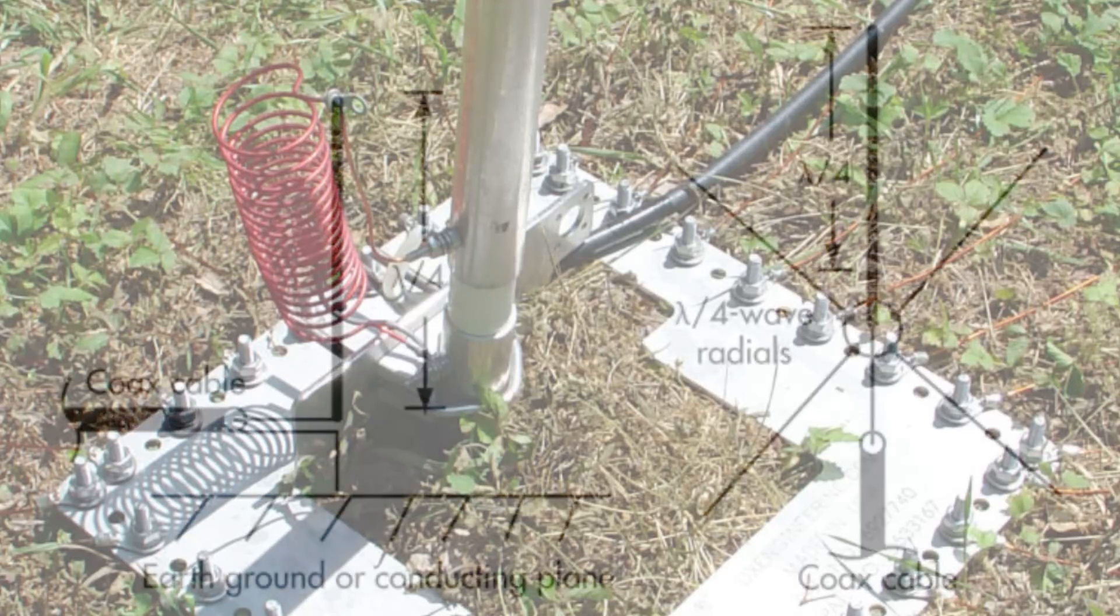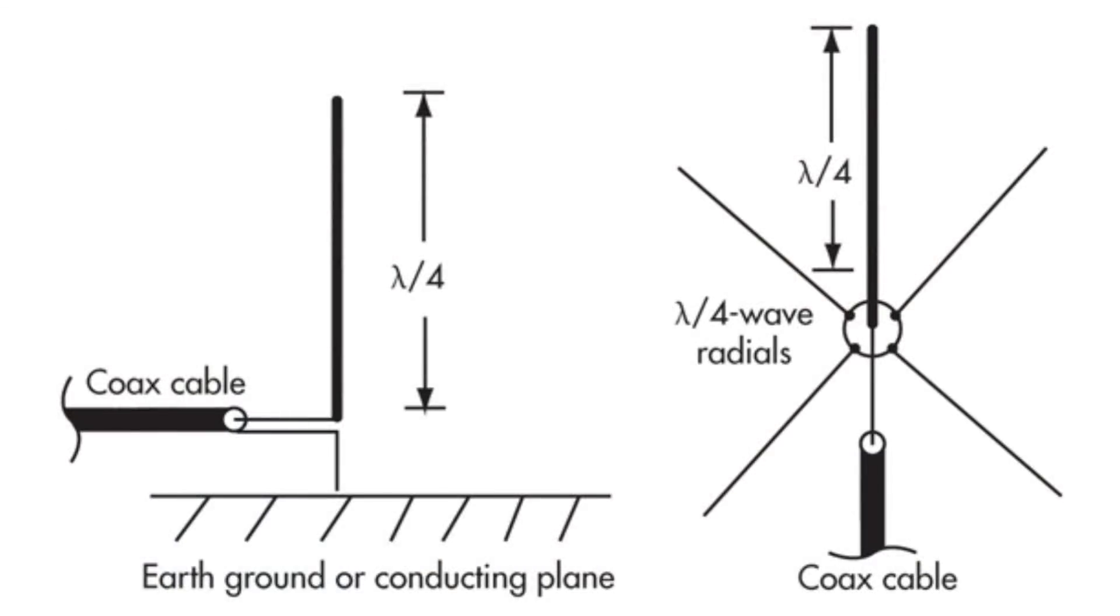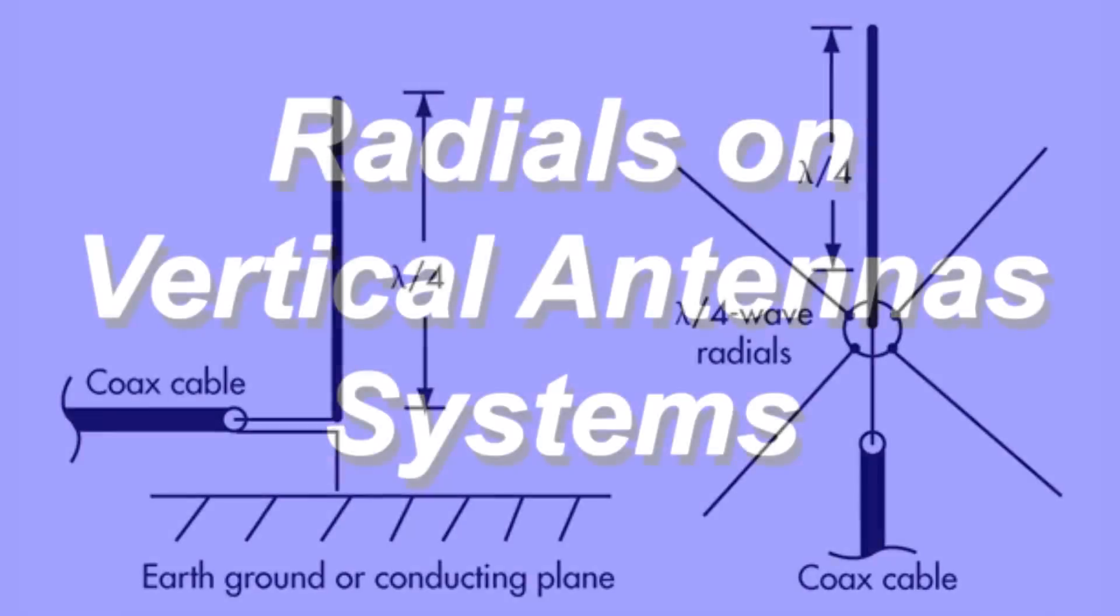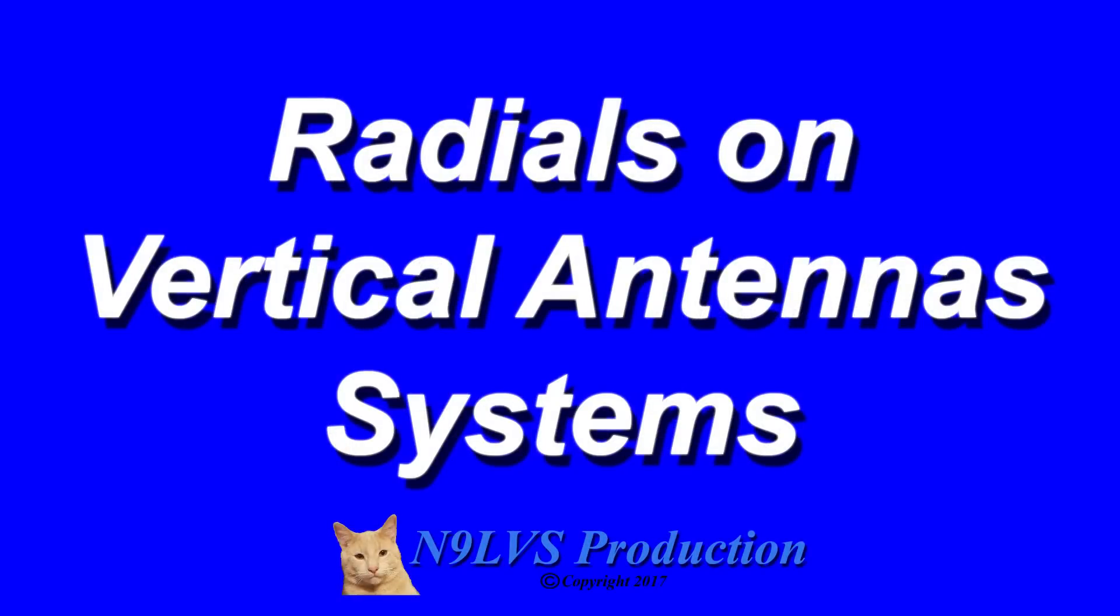So what did we really accomplish? Basically, we got a quarter wave vertical. In my case, there's a little coil at the bottom because it is for 80 meters. And we put out some radials. Now we are all ready to jump on 80 meters to see how it works. I hope this video has been helpful. 73 from N9LVS.